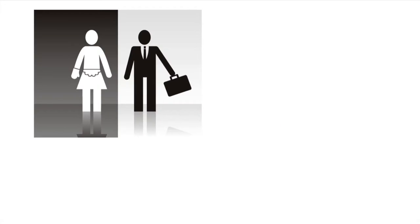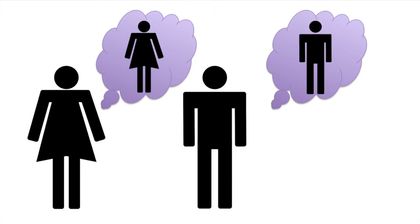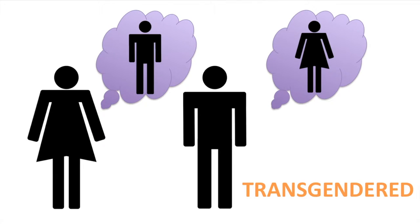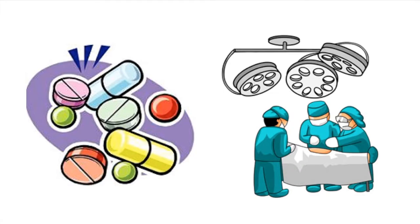Gender is a social construct in which certain characteristics, roles, and activities are associated with each sex. People whose gender matches their sex are cisgender, and people whose gender is different from their sex are transgender. Some transgender people receive hormone treatment and/or gender reassignment surgery so their gender matches more closely with their sex, and some don't. It depends on what the individual wants and what kind of resources they have available.